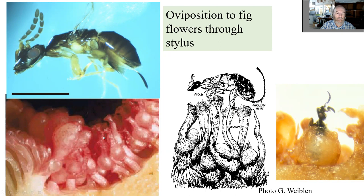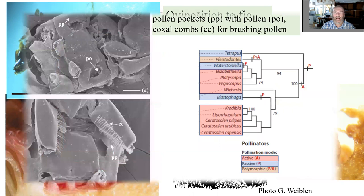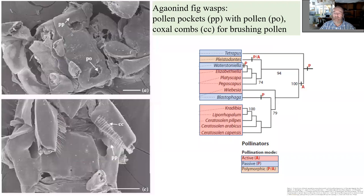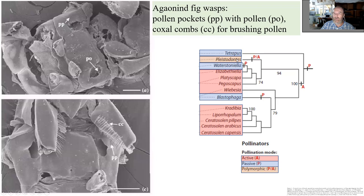Pollination can be active or passive. The ancestral state is passive pollination. Active pollination evolved later and is characterized by pockets on the thorax for pollen and brushes on the legs, which the fig wasp actively uses to sweep pollen into the pockets. Looking at the phylogeny on the generic level of pollinating wasps, active pollination developed and was then lost in some lineages again. There is one genus which is mixed for active and passive pollination.